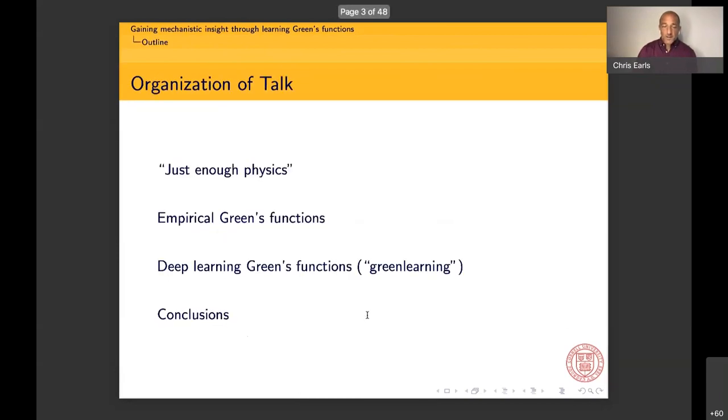And so as I indicated, there are three major parts to this talk: just enough physics, data-driven reduced order modeling piece, and then how that inspired this notion of learning what I call empirical Green's functions or Green's functions that are distilled out of data that we see streaming from the response of our system. And then finally, how it is that we can extend this idea of empirical Green's functions to a much broader context through the use of deep learning. And that will then conclude the talk today.